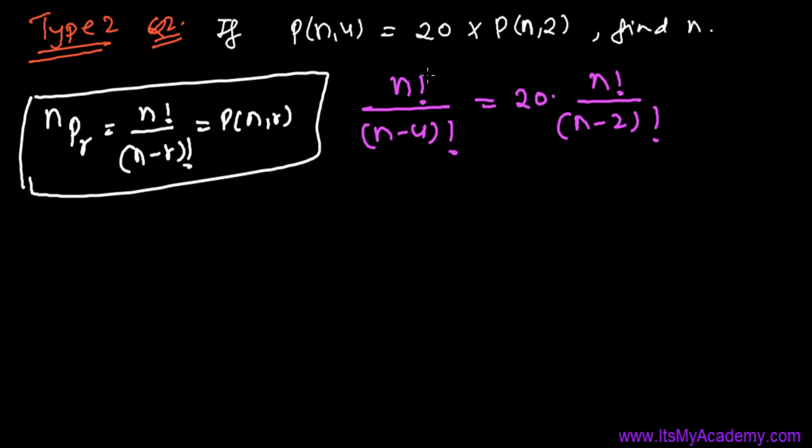If you see, n factorial on both sides is getting cancelled. Now we have (n-2)! equals 20 times (n-4)!. And we have an opportunity here: it's (n-4) and (n-2).